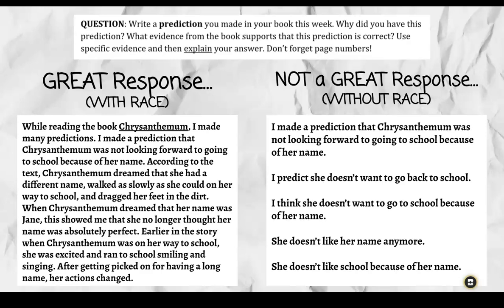I wanted to show a side-by-side of how RACE helps us write a great response compared to one written without the strategy. The great response with RACE says: 'While reading the book Chrysanthemum, I made many predictions. I made a prediction that Chrysanthemum was not looking forward to going to school because of her name. According to the text, Chrysanthemum dreamed that she had a different name, walked as slowly as she could on her way to school, and dragged her feet in the dirt. When Chrysanthemum dreamed that her name was Jane, this showed me that she no longer thought her name was absolutely perfect. Earlier in the story, when Chrysanthemum was on her way to school, she was excited and ran to school smiling and singing. After getting picked on for having a long name, her actions changed.' It's a very detailed response with evidence and support for my prediction.